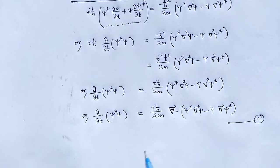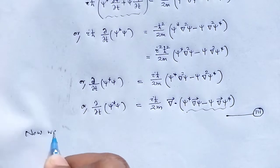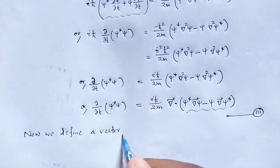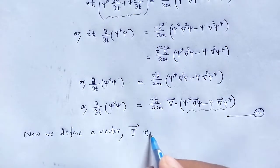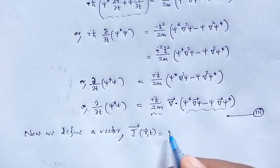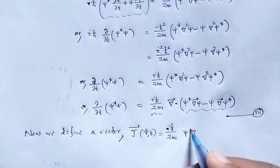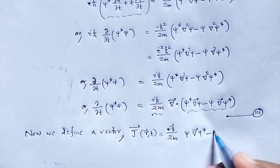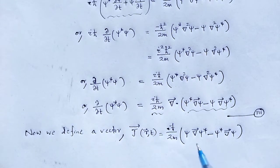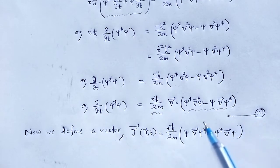Now we define that term as a vector j. We define j vector of r and t as: j(r,t) equals iℏ/2m (ψ grad ψ* minus ψ* grad ψ). That term is treated as a vector, and that means the equation will be changed now.